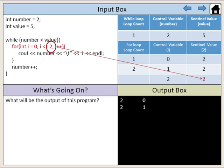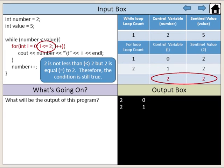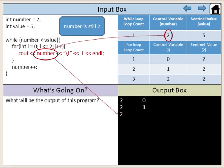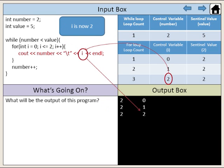The sentinel value is still 2. 2 is not less than 2, but 2 is equal to 2. Therefore, the condition is still true, so we enter the loop body again. Number is still 2, and i is now 2.